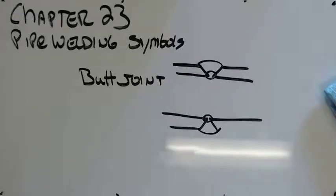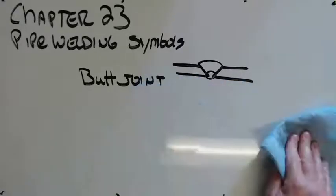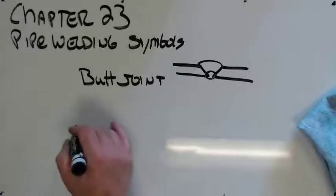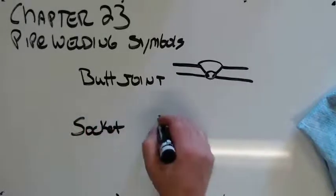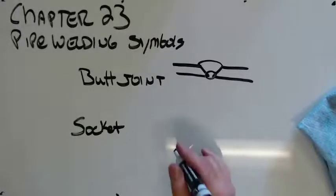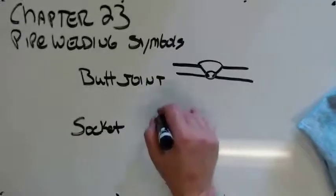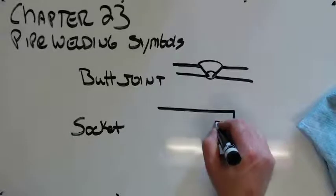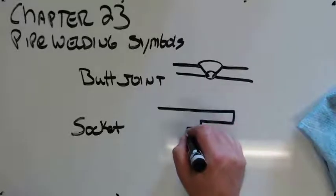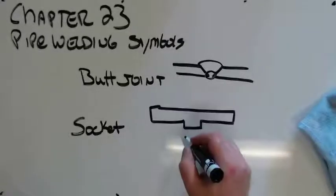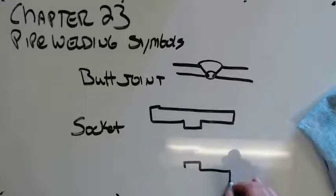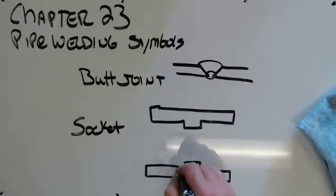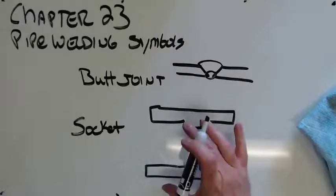The other way to do this, this is becoming a lot more common, is socket connections. And what that is, and they can either be a single socket or a double. So you've got, it's almost like a threaded connection, but it welds. So you've got something that looks like that. And of course, it's round. This is the cutaway section of it.